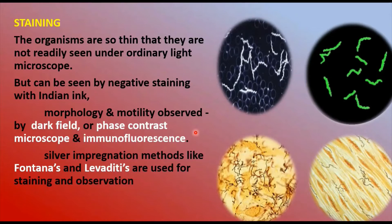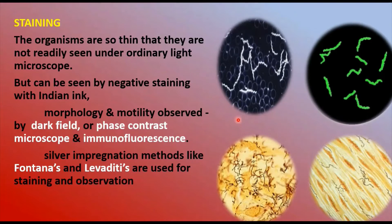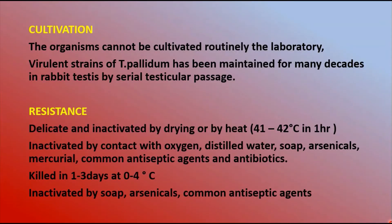In dried preparations, the spirochetes need to be thickened by silver impregnation methods such as Fontana's or Levaditi's methods, which are used for identification and observation of Treponema pallidum. So the key microscopy methods are dark-field microscope, phase contrast, and immunofluorescent microscope.